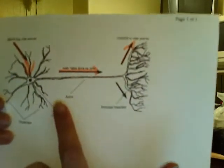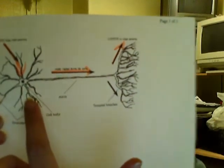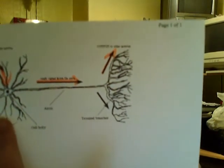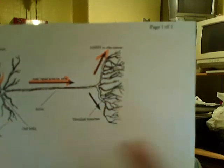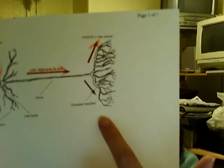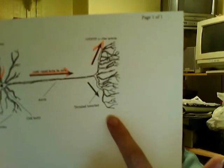Through a chain of chemical events, a part of the neuron will pick up an impulse that is then shuttled through the end of the axon and transmitted to the next neuron.